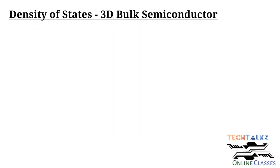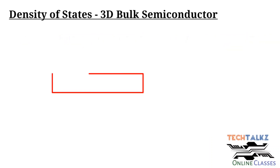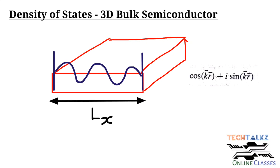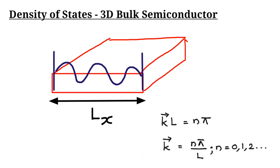Now I am going to derive the density of states of a 3D bulk semiconductor. The density of states is the number of energy states at a particular energy level per volume, with units of per eV per cm³. Consider a semiconductor — taking one axis along the x-axis, the electron will have wave propagation. With the boundary condition that when the wave approaches the edges of the semiconductor it goes to zero, we get k·Lx = n·π, so k = nπ/L, where n can be 0, 1, 2, etc.